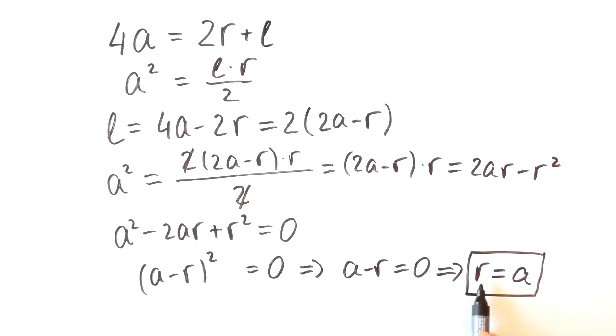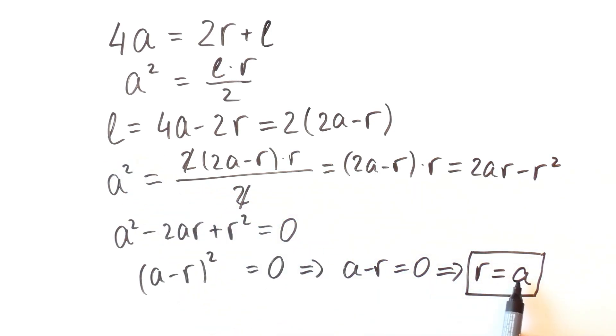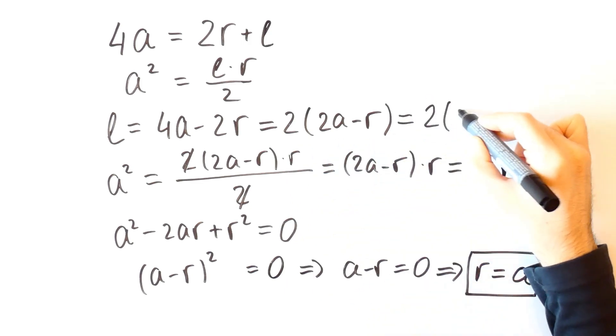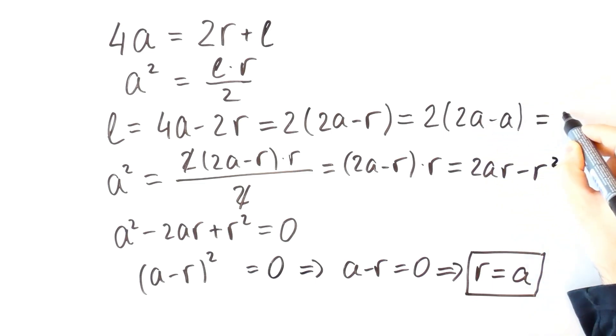So we found the radius and it is equal to the side of the square. To find the arc length we just need to put A instead of R in this expression. The arc length is equal to 2 times 2A minus A and that is equal to 2A.